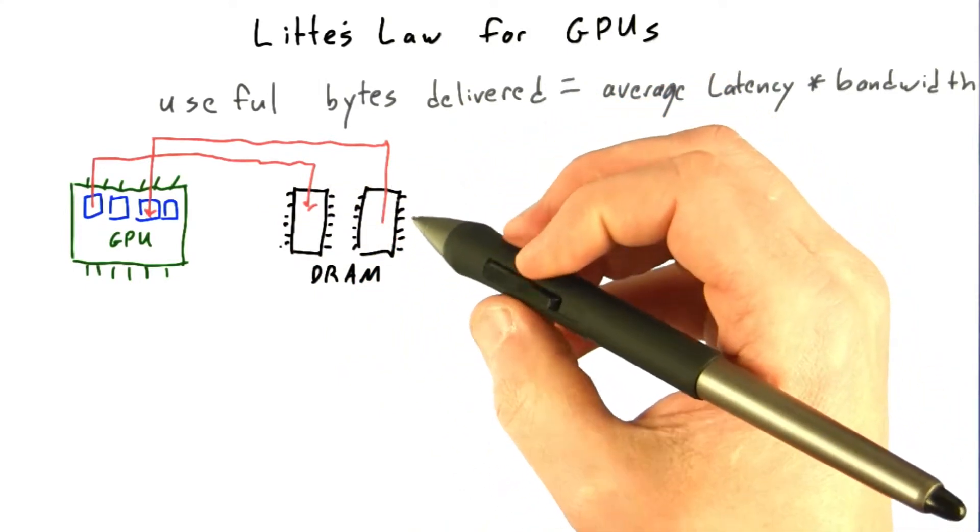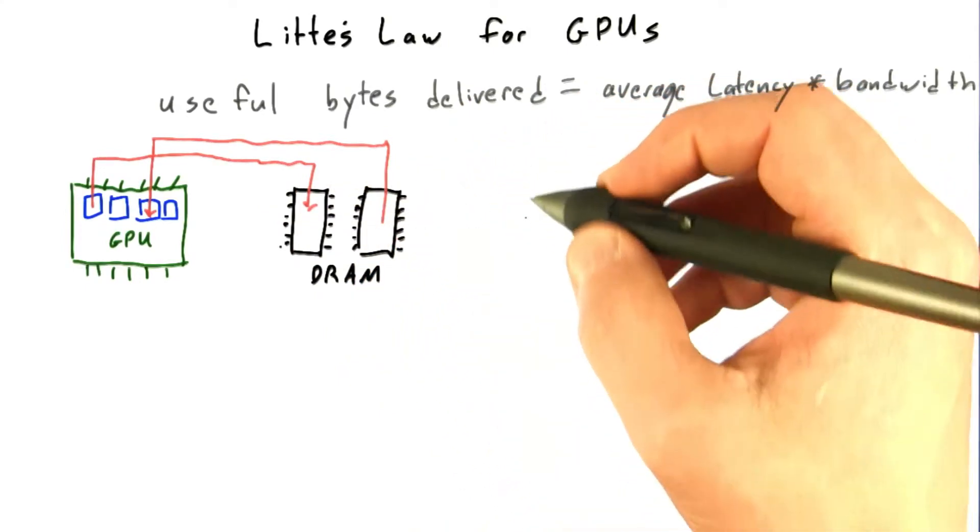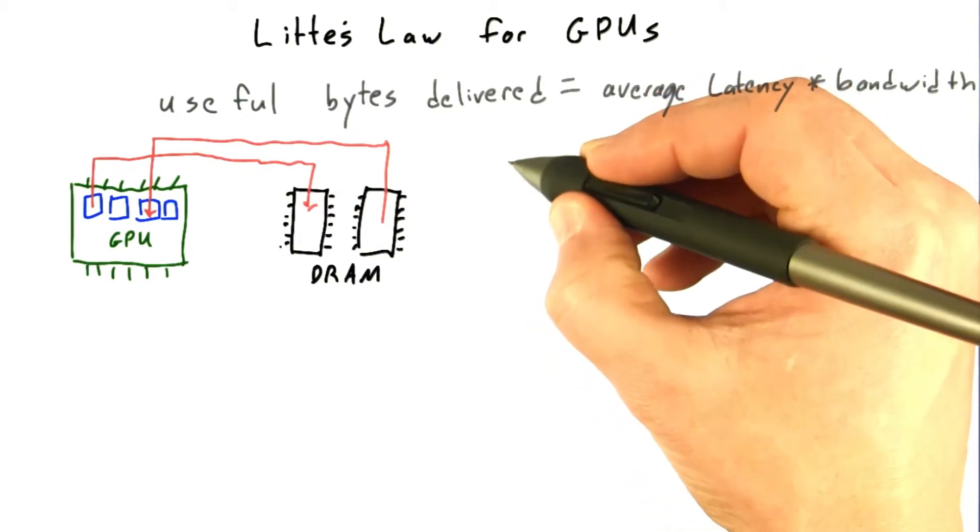You can find the details for your particular GPU online, but in general, any DRAM transaction is going to take hundreds of clock cycles.